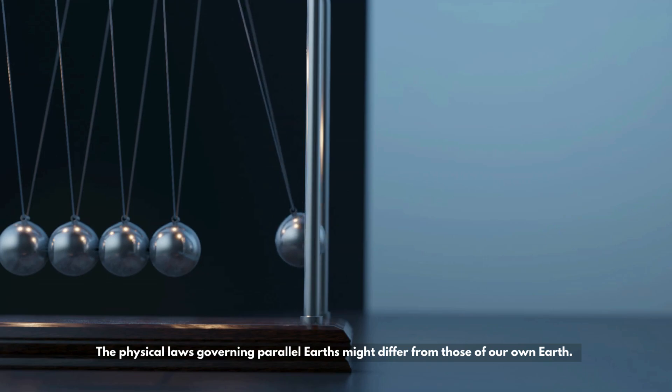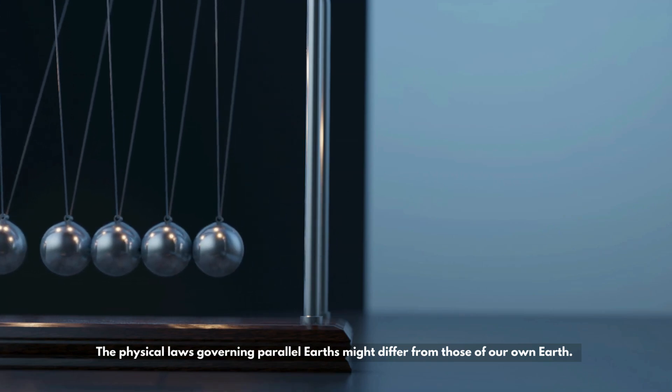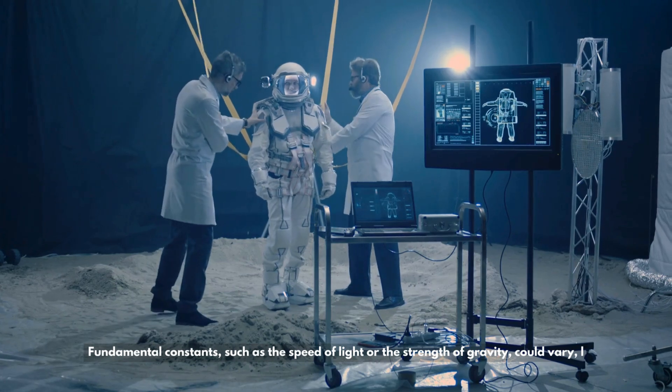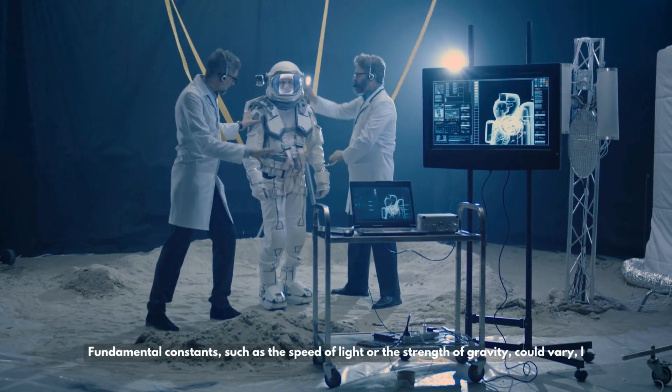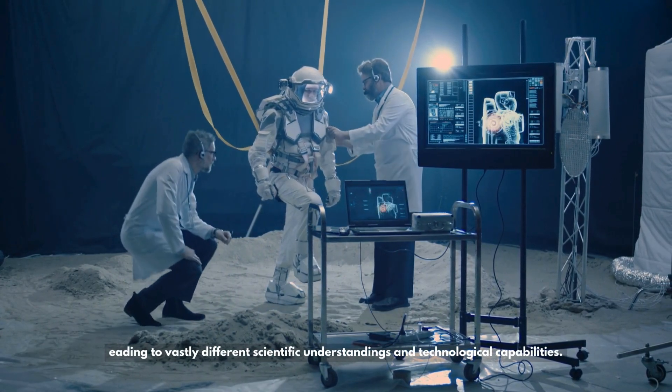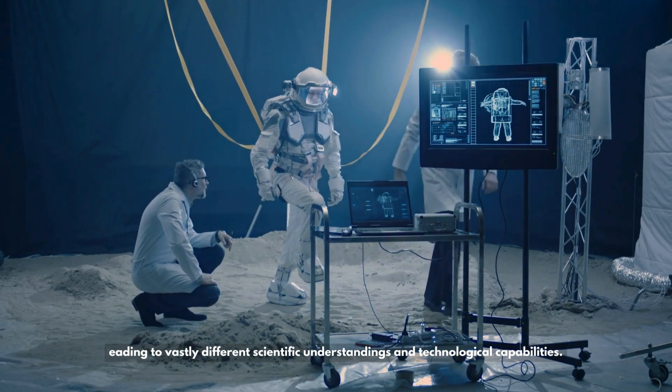Alternate laws of physics: The physical laws governing parallel Earths might differ from those of our own Earth. Fundamental constants, such as the speed of light or the strength of gravity, could vary, leading to vastly different scientific understandings and technological capabilities.